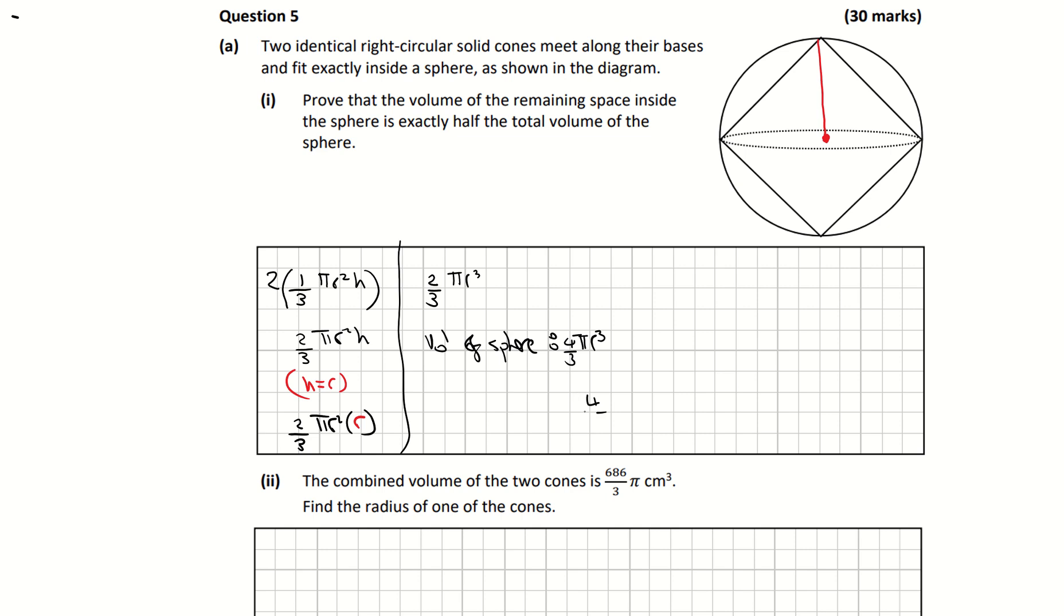You can see here that the volume of my 2 cones is half the volume of my sphere. Because if I take the volume of my sphere, 4 over 3 pi r cubed, and divide it by the volume of my 2 cones, 2 over 3 pi r cubed, I get 2. And that's telling me then that the 2 cones are half the volume of the sphere. Therefore, volume of sphere is double volume of 2 cones. And that's part A, part 1.